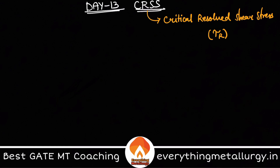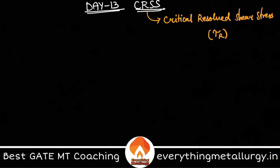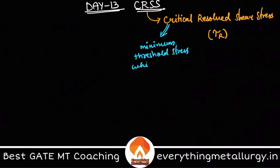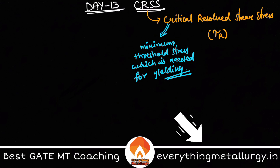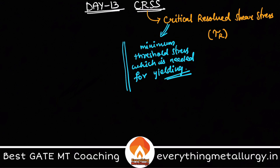So what is CRSS? Basically, we know that in any kind of material we have different stress levels, and in any different material we require different stress in order for plastic deformation to take place. So CRSS is the minimum stress — we can call it the minimum threshold stress — which is needed for plastic deformation to take place, or you can say for yielding.